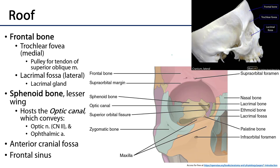The roof of the orbit consists of two bones: the frontal bone and the lesser wing of the sphenoid bone. The greater wing comes into play with the lateral wall. On the frontal bone, medially there's going to be a trochlear fovea, which is a point of contact for the trochlea — a cartilaginous ring that serves as a pulley for the superior oblique muscle. We'll discuss this in greater detail when we cover the extraocular muscles.